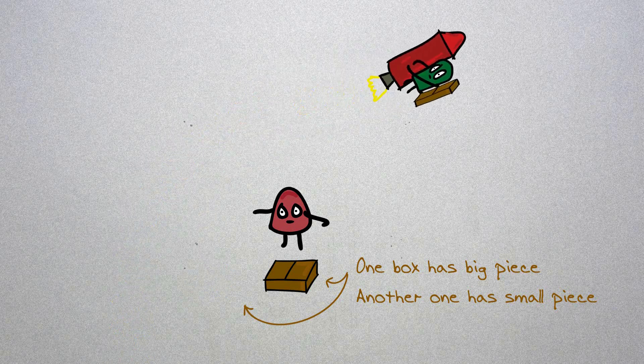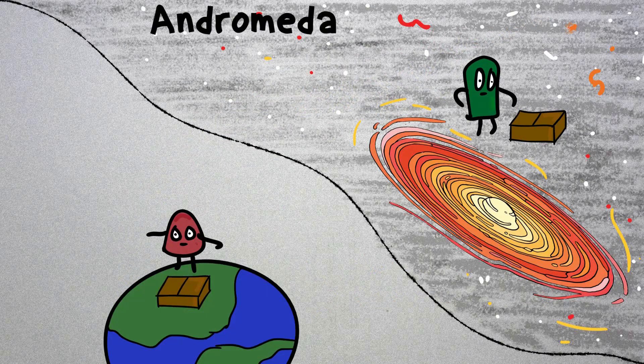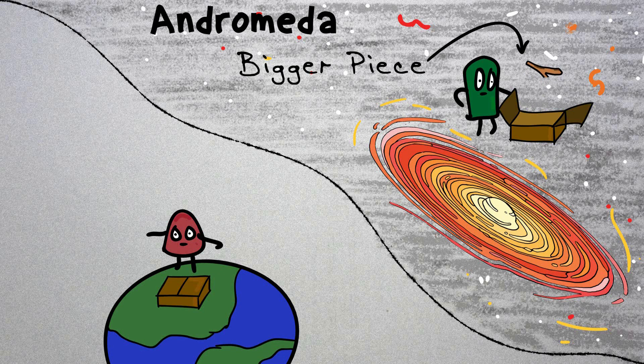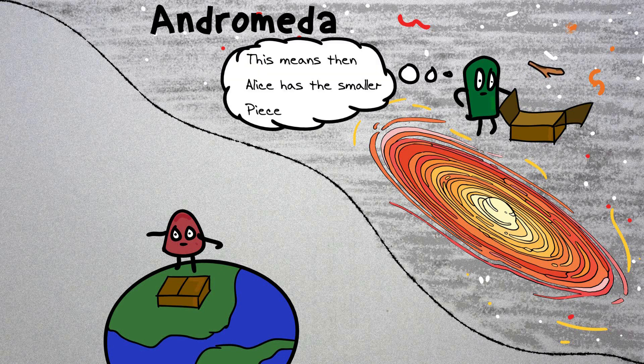Now we send Bob to Andromeda Galaxy because why not? And then he looks at his piece. It's a bigger piece and instantly he knows that Alice would have the smaller piece.